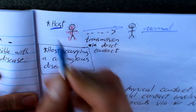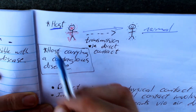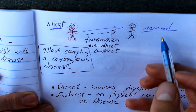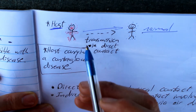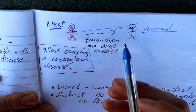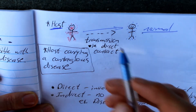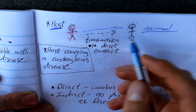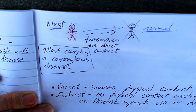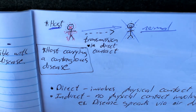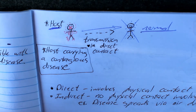Here we have a host — he's the carrier of a pathogen. On this side we've got a normal healthy person. The host, through direct physical contact such as touching or kissing, transmits the pathogen to the normal person, and he also becomes ill.